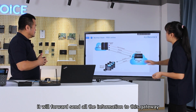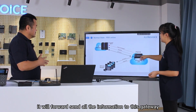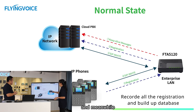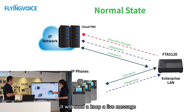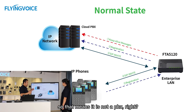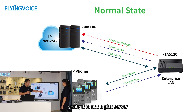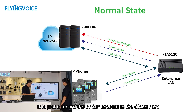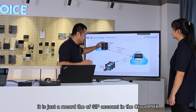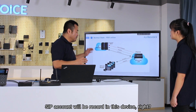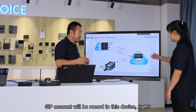The gateway also has a database to record all registration information. Meanwhile, it sends a keepalive message to the PBX server to detect whether the server is available or offline. It is not a PBX server itself — there is no special SIP account configuration needed. It simply records the SIP accounts from the Cloud PBX. All the active SIP accounts between the Cloud PBX and the IP phones are recorded in this device.